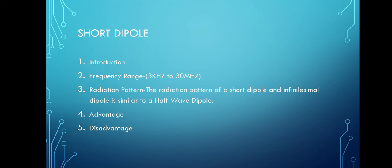The next topic is the short dipole. A short dipole is a simple wire antenna where one end is open-circuited and the other end is fed with an AC source. This dipole got its name because of its length. The definition of a short dipole antenna: one end is open-circuited and the other is fed with an AC source.